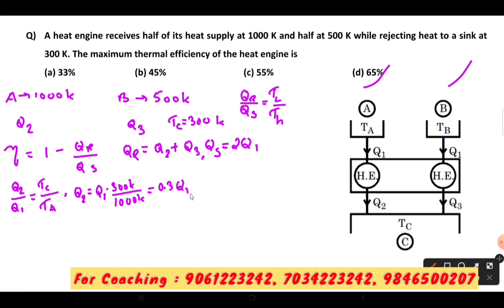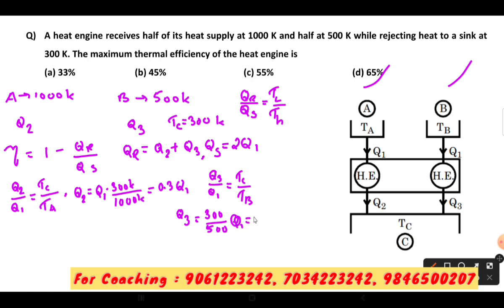Then the second relation: Q3 by Q1 is equal to TC divided by TB. Q3 is equal to TC/TB times Q1, which is 300 divided by 500 times Q1. Therefore Q3 is equal to 0.6 Q1.